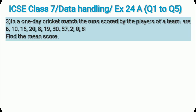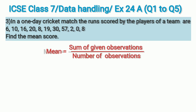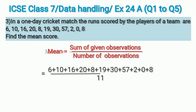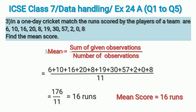Moving to the third question: in a one-day cricket match, the runs scored by the players of a team are given — find the mean score. Using the formula, mean equals sum of given observations divided by number of observations. We are given runs scored by 11 players. Adding all the runs gives 176, and 176 divided by 11 is 16. So the mean score is 16 runs.